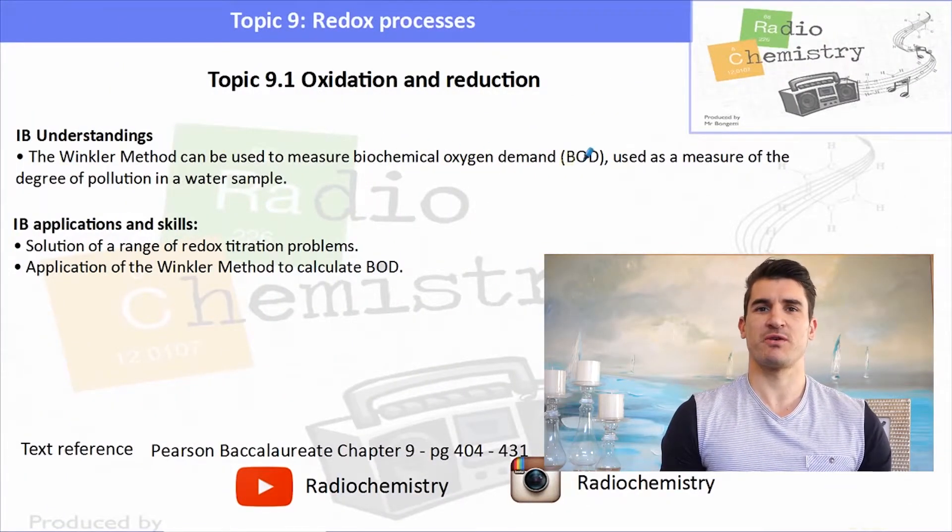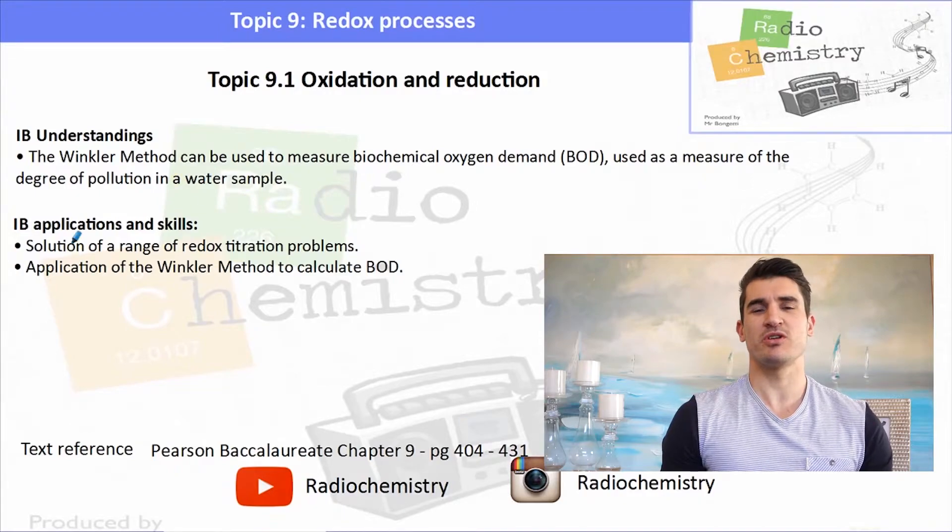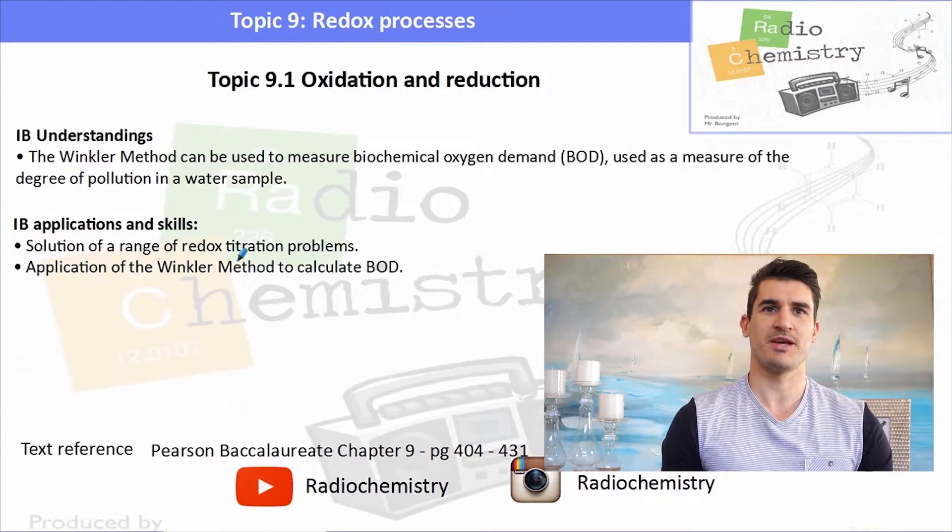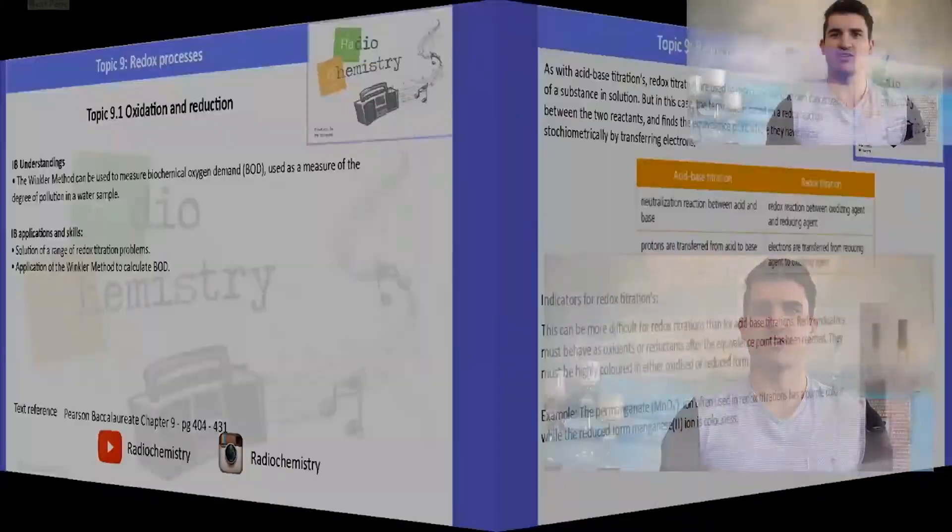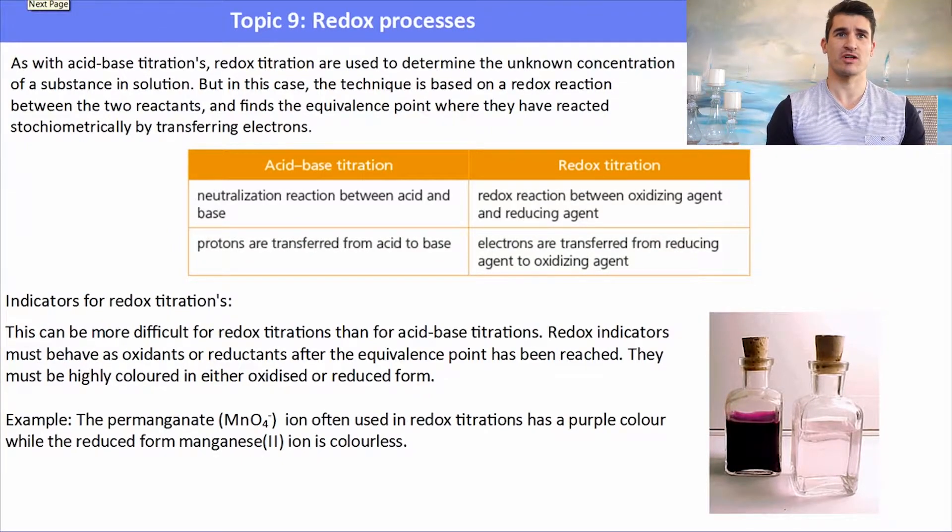The IB understandings focus around the Winkler method which looks at biochemical oxygen demand, and then we look at using a range of different reactions for redox titrations.